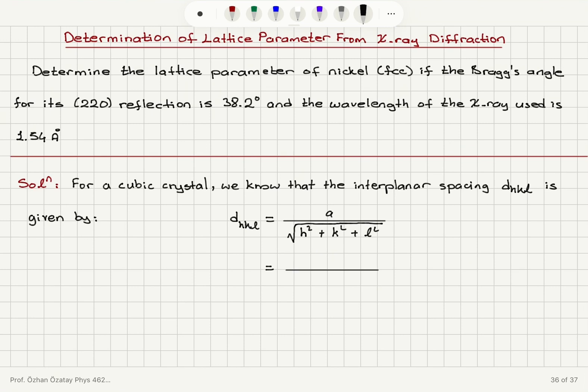So, with that, for the given problem, I have the lattice parameter A is A divided by square root 2-square plus 2-square plus 0-square, because 220 implies H equals 2, K equals 2, L equals 0.